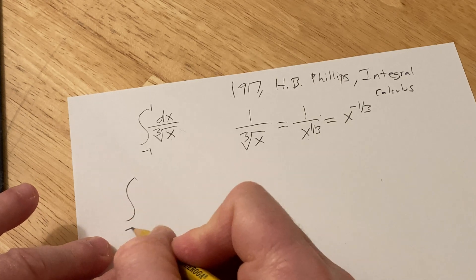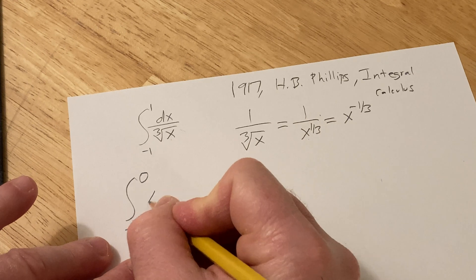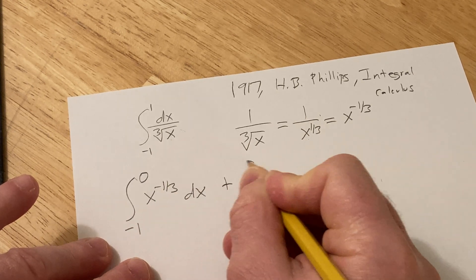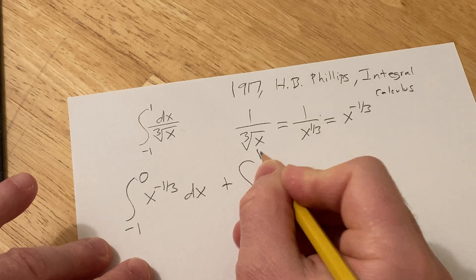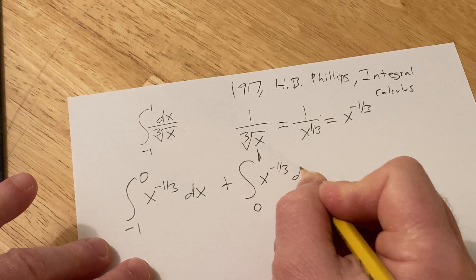So this becomes the integral from negative one to zero of x to the negative one-third dx, plus the integral from zero to one of x to the negative one-third dx.